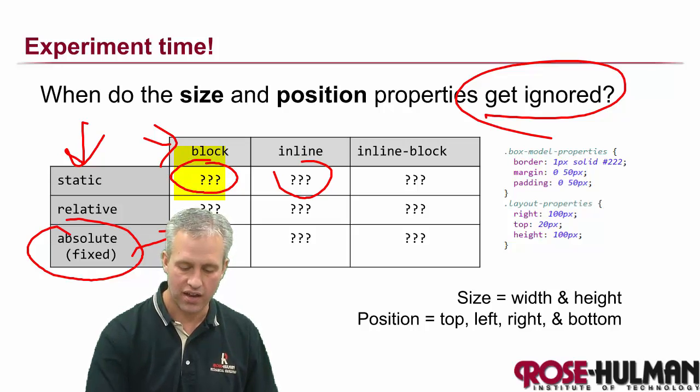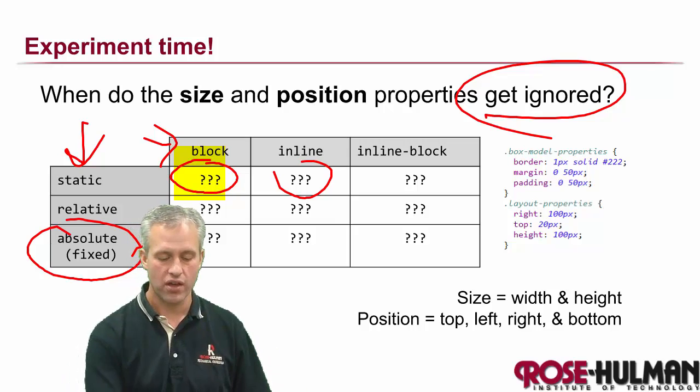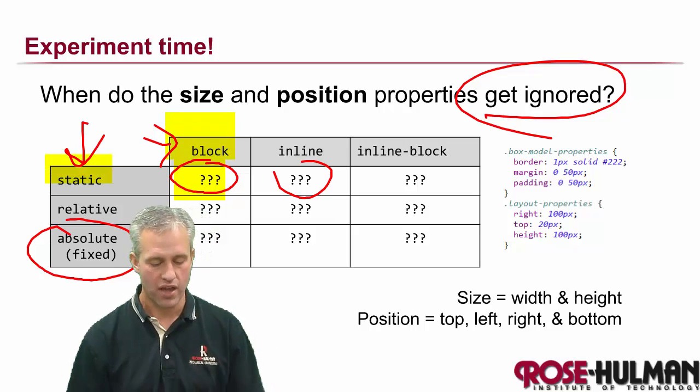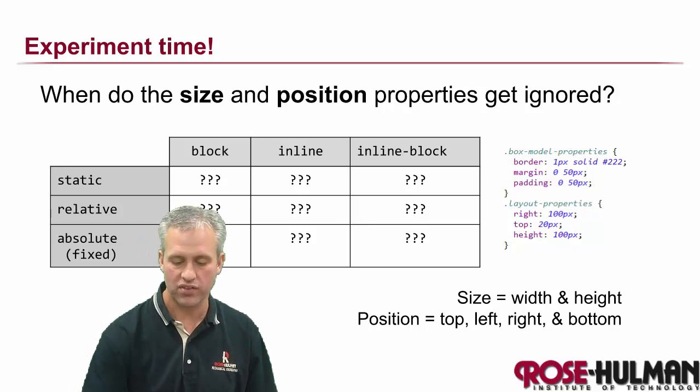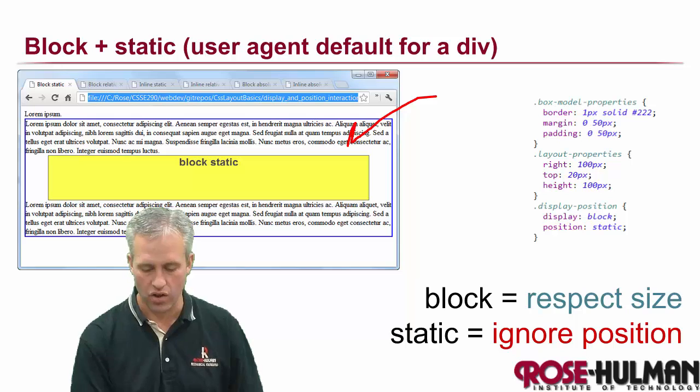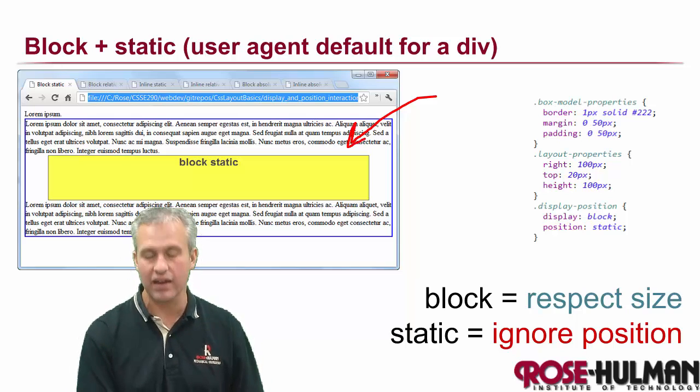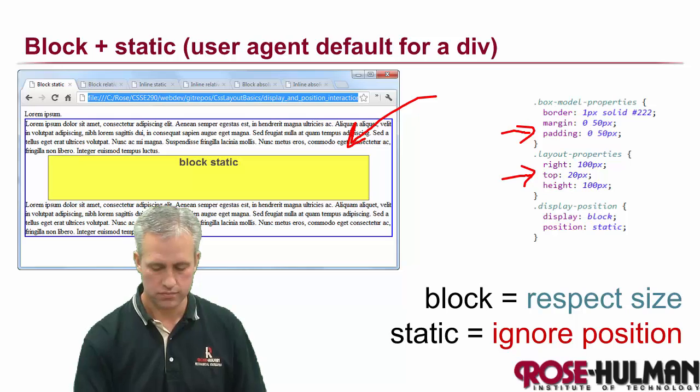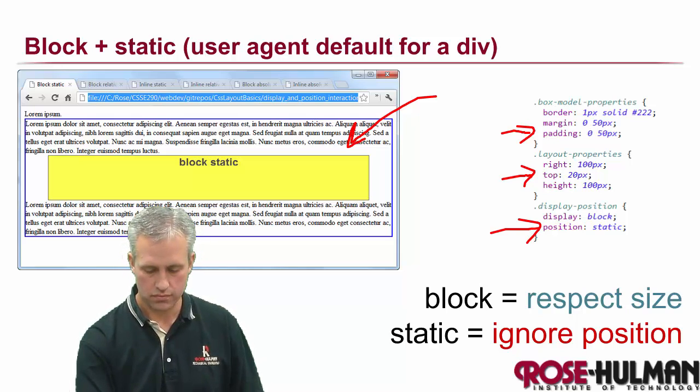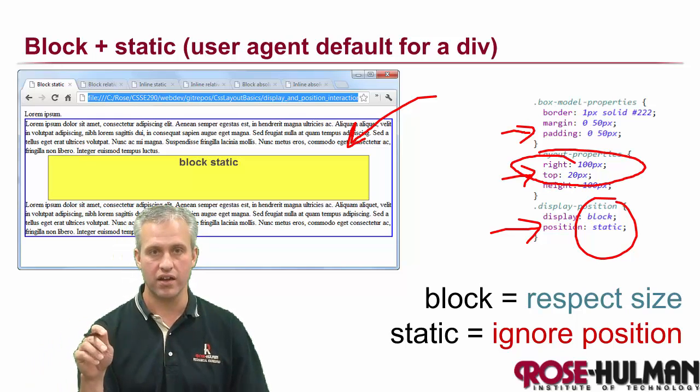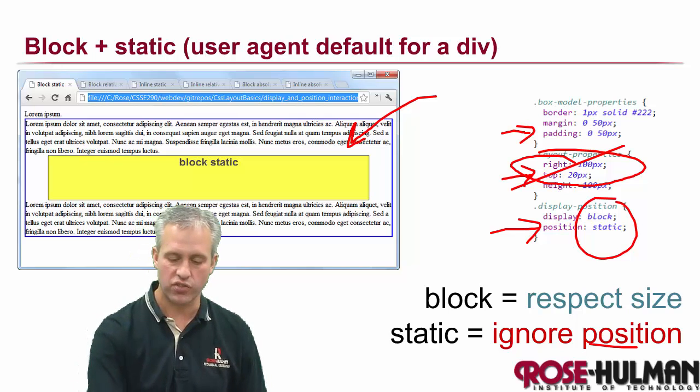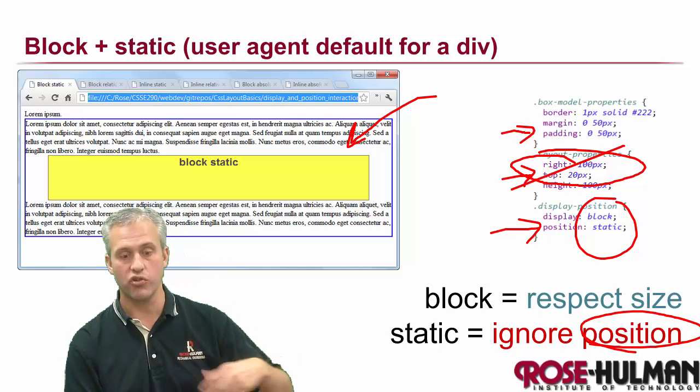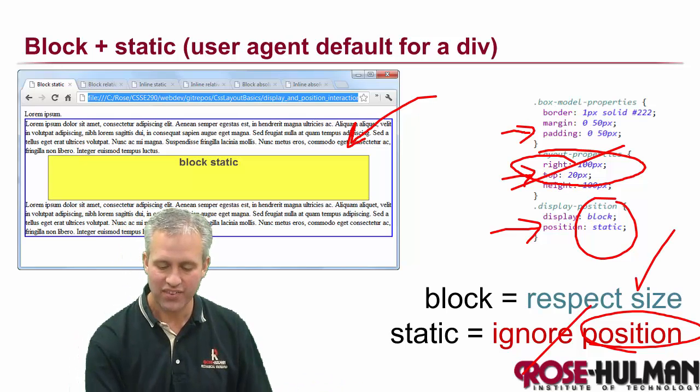So the first one we're going to look at is kind of the default. What happens if you're a div and you're running your default? You get static as your default. You get block as your default. And then what does that page look like? And what gets ignored? So the example that we've picked is we've picked a giant yellow box. And onto this giant yellow box, we've put on margin and padding. We've put on positions of right and top so it should get moved over. And then we've actually got the display position that we're choosing for this combo. So this one is block static. And you can notice that it did not get moved.